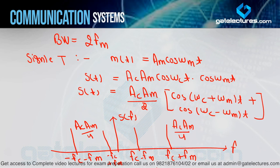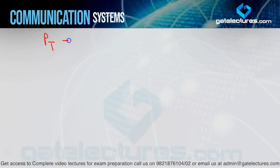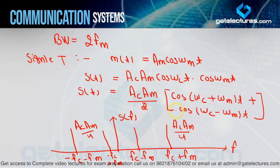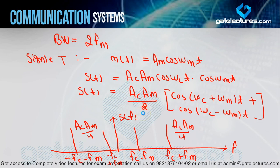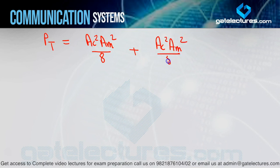For total power Pt: the first term is cosine with amplitude AC·Am/2, so power = (AC·Am/2)² / 2 = AC²·Am²/8. The second term has the same amplitude, so power = AC²·Am²/8. Total power Pt = AC²·Am²/4. Now in DSB-FC single-tone modulation, we used the modulation index concept: μa = KA × Am.